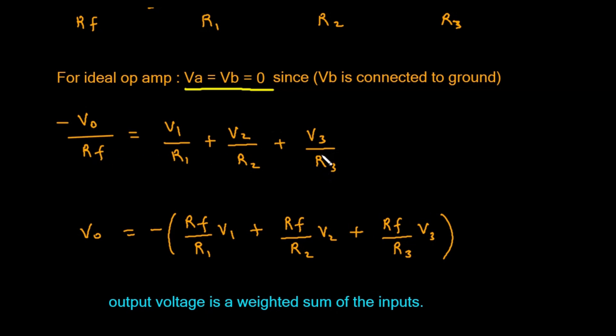Cleaning this up, the equation simplifies dramatically to: negative Vo divided by Rf equals V1 divided by R1, plus V2 divided by R2, plus V3 divided by R3.